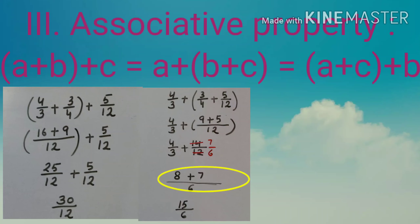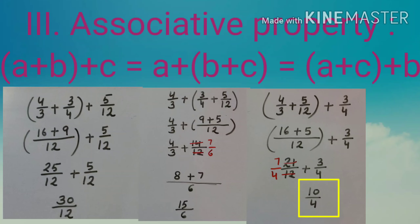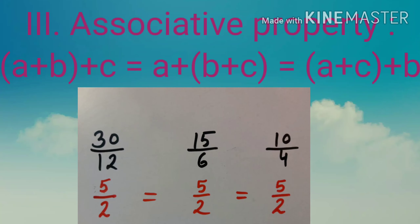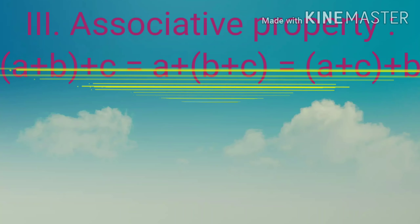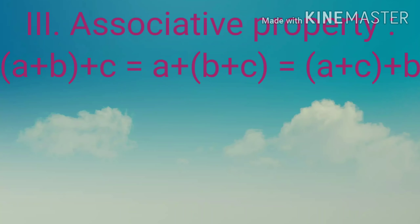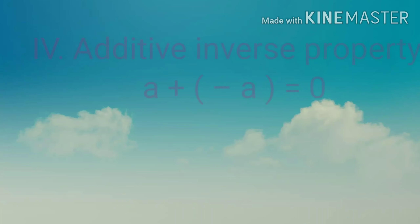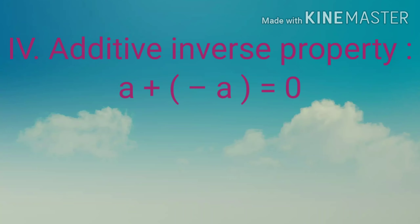The third property is the associative property. When we add more than two rational numbers in any association, the sum remains the same. Whether we add a and b first then c, or b and c first then a, or a and c first then b, the answer remains the same. Let's take three rational numbers: 4/3, 3/4, and 5/12.